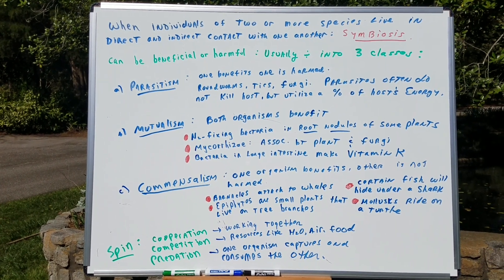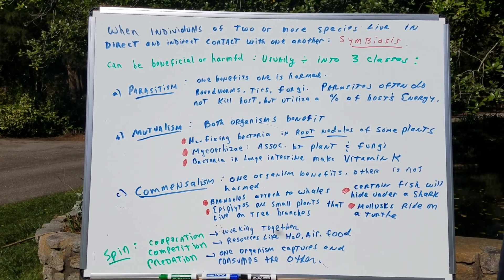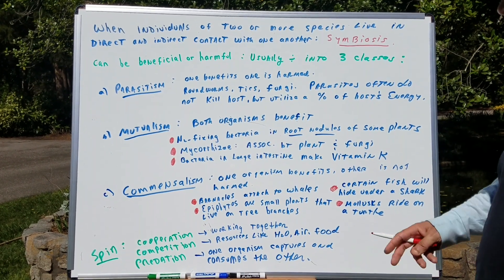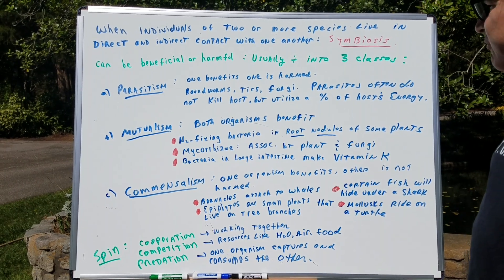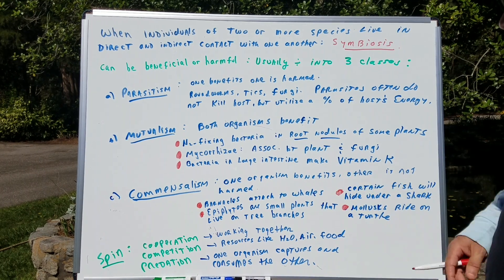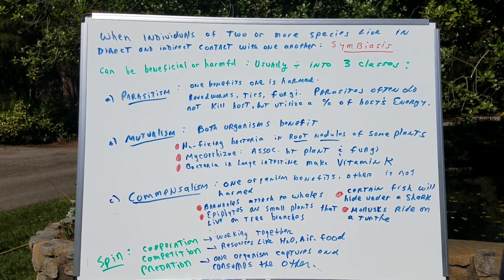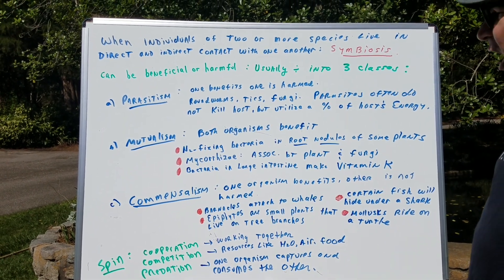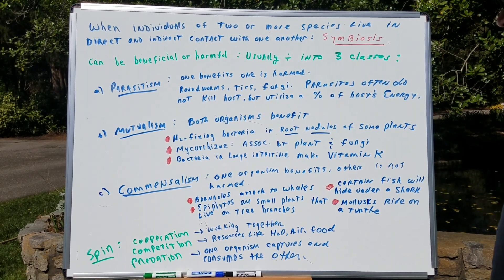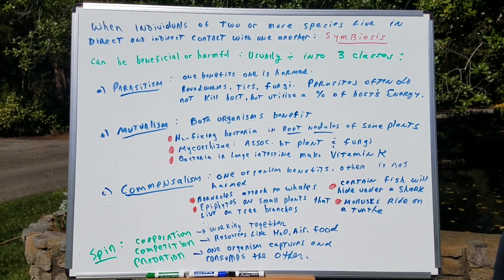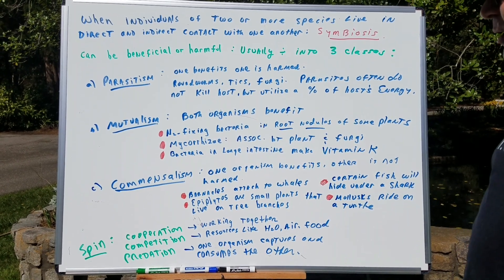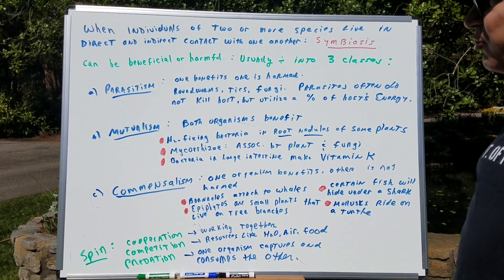Mutualism is another good example of a symbiosis, where both organisms benefit from the relationship. Nitrogen-fixing bacteria in root nodules of some plants is a great example. Mycorrhizae — the association between plants and fungi — is always a DAT possible question. Bacteria in the large intestine, which make vitamin K, are also great examples of mutualistic relationships.